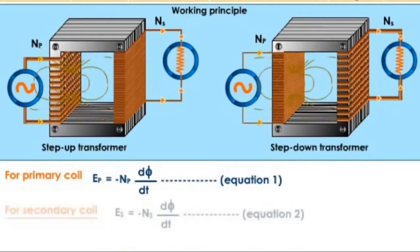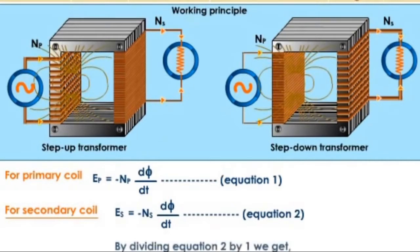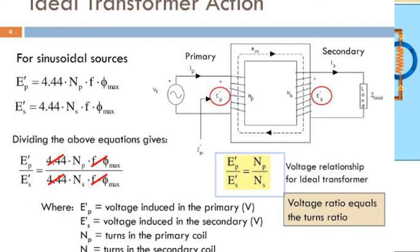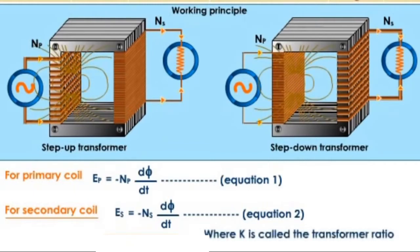For the secondary coil, the equation becomes ES = −NS (dΦ/dt), equation 2. Dividing equation 2 by equation 1, we get ES/EP = NS/NP = K, where K is called the Transformer Ratio.